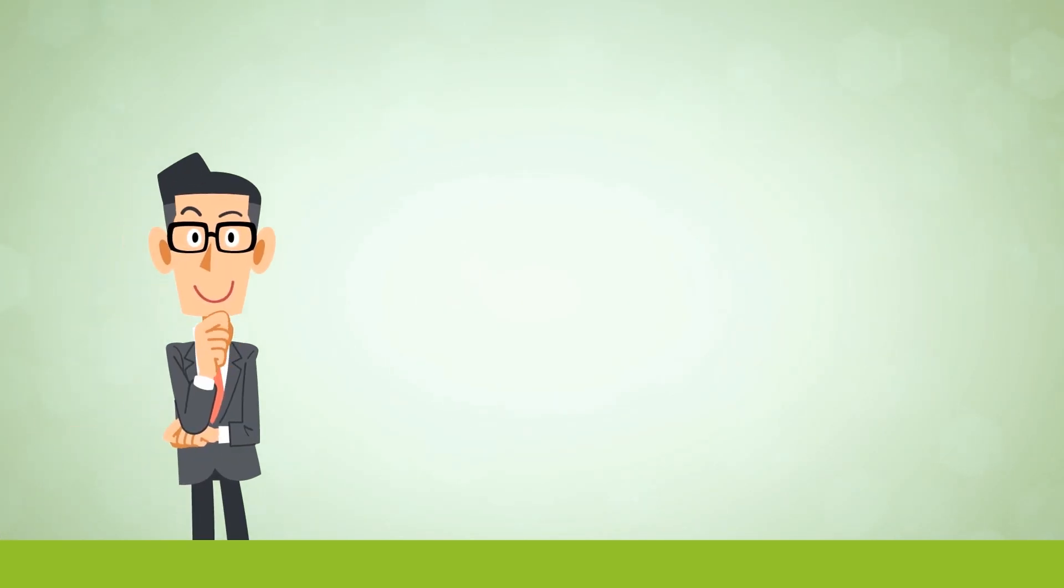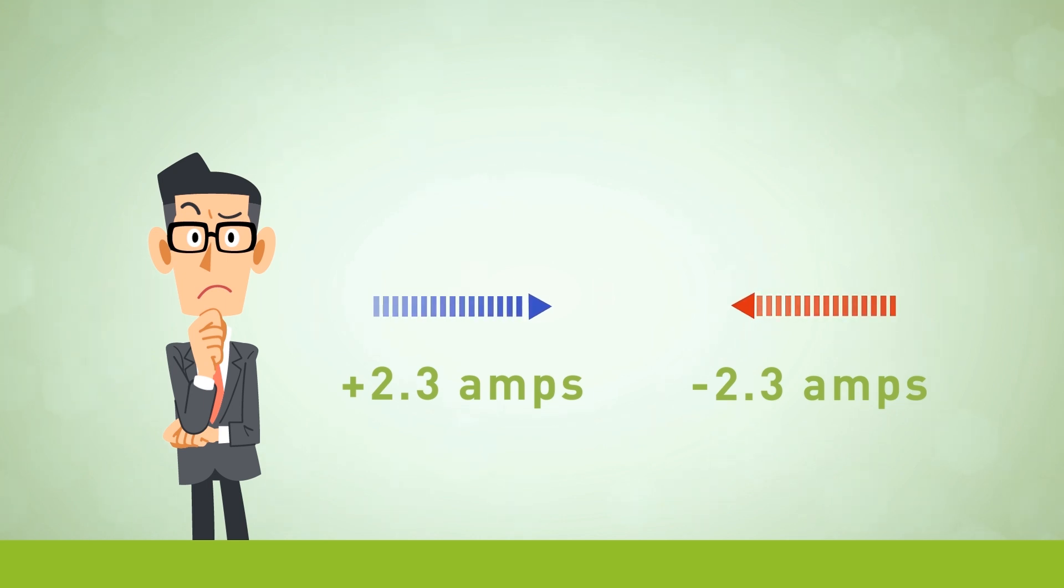A lot of people see the pluses and minuses like plus 2.3 amps and minus 2.3 amps and they get confused and think that one offsets the other. It doesn't. The positive and negative numbers are used to show the movement of the current. Current is caused by the movement of the electrons and it doesn't matter which direction the electrons are moving.